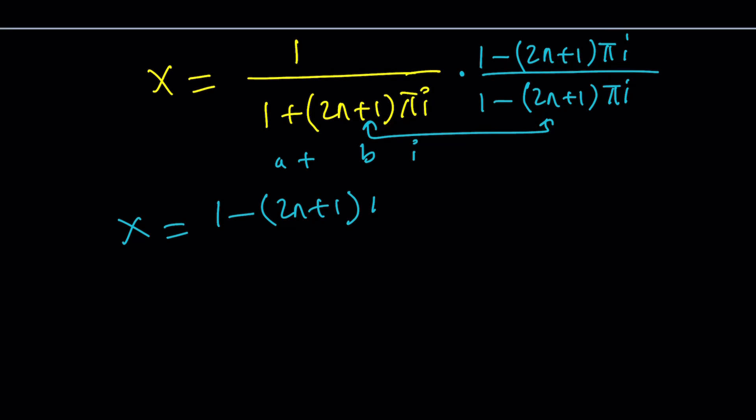And of course I forgot to say but n is an integer, right, positive or negative. And now from product of a plus bi and a minus bi we're supposed to get the sum of two squares a squared plus b squared. So this is going to give us 1 plus 2 n plus 1 squared pi squared. You're not writing the i because there's no i in the product.